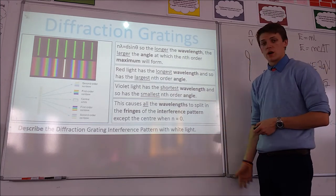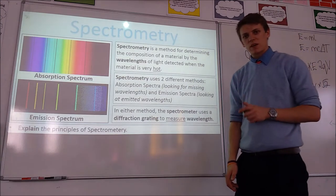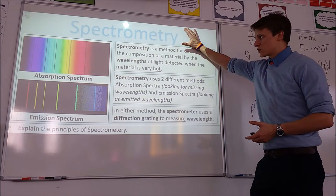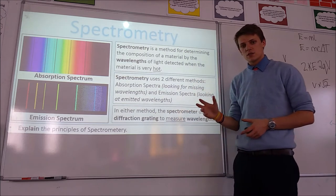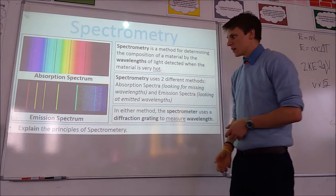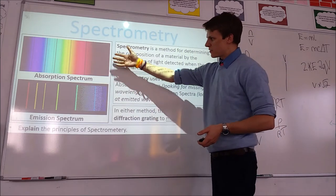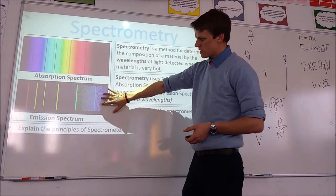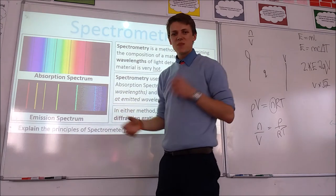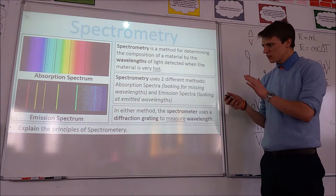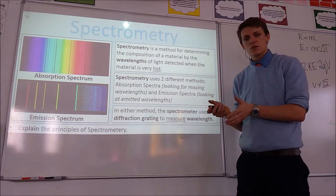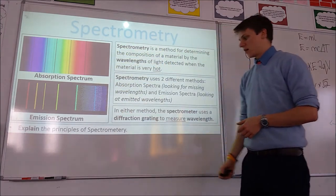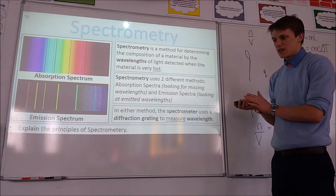So that's with white light. Now let's look at some applications of a diffraction grating. Mostly they're used in spectrometry, where we look at different spectra to determine what something is made of. We do that in two ways: one method uses absorption spectrum, where we look at the wavelengths absorbed by certain materials; and we also deal with emission spectrum, where we look at the wavelengths emitted by certain materials. The diffraction grating is used as a way to actually measure these wavelengths.